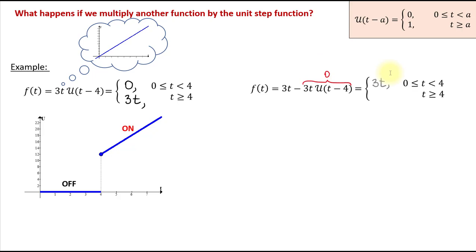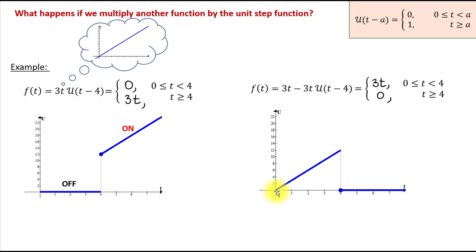Now for the second interval, all values of t greater than or equal to 4: the unit step function equals 1, and the product of 3t and 1 is 3t. Then 3t minus 3t is 0. So this piecewise function equals 0 for all values of t greater than or equal to 4. Looking at the graph: from 0 to 4 we see the graph of 3t, and then after 4 it's just 0. In terms of on/off, function 3t is being turned off at t equals 4.